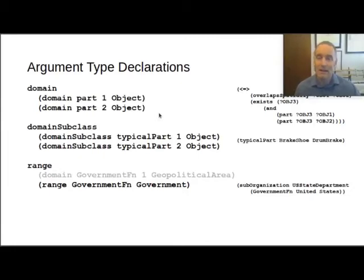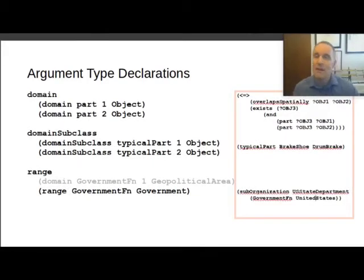Whereas statements involving a relation are sentences that have a truth value. They're either true or false. But for a function, it denotes a term. So for example, off to the right, we can see that the U.S. State Department is a sub-organization of the government of the United States. So government of United States is a function with an argument that stands for a term, that is the government of the United States, rather than the United States itself. And so here on the left, we're saying that the range, the return type, or the thing that is denoted by this function is an instance of a government.